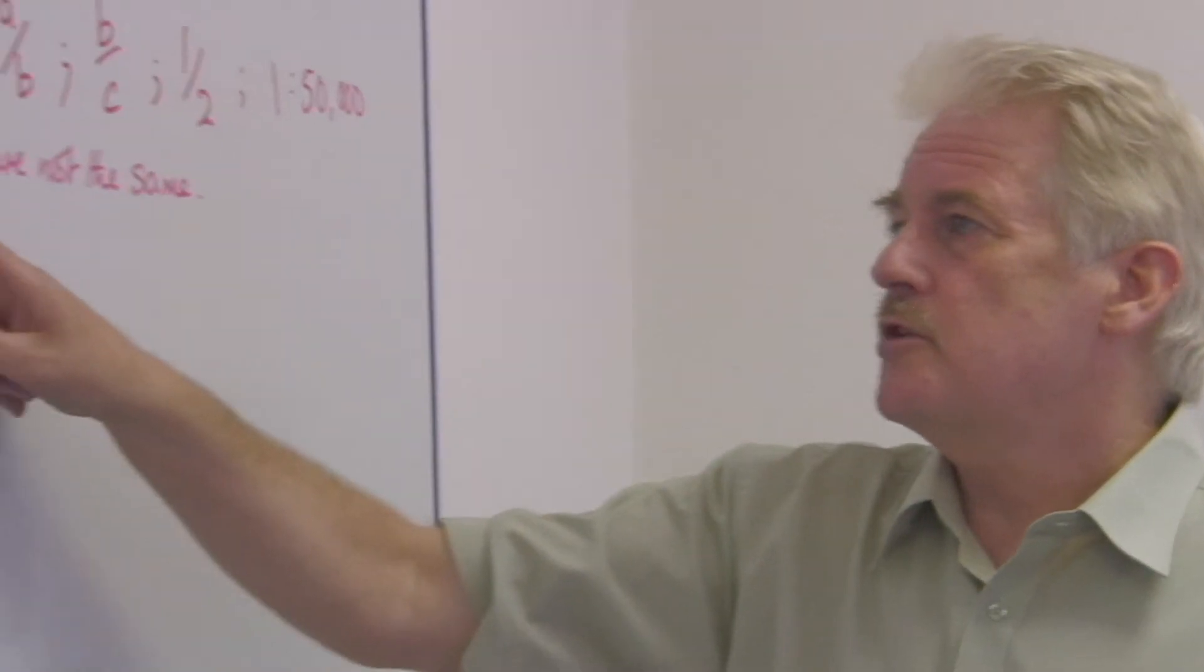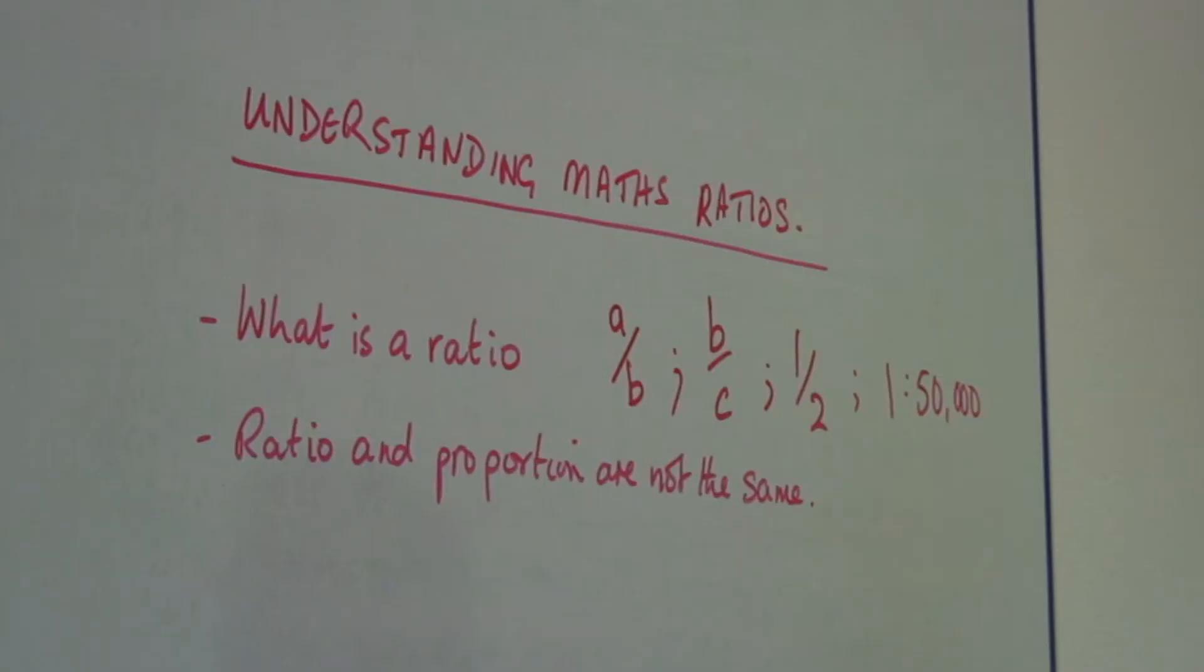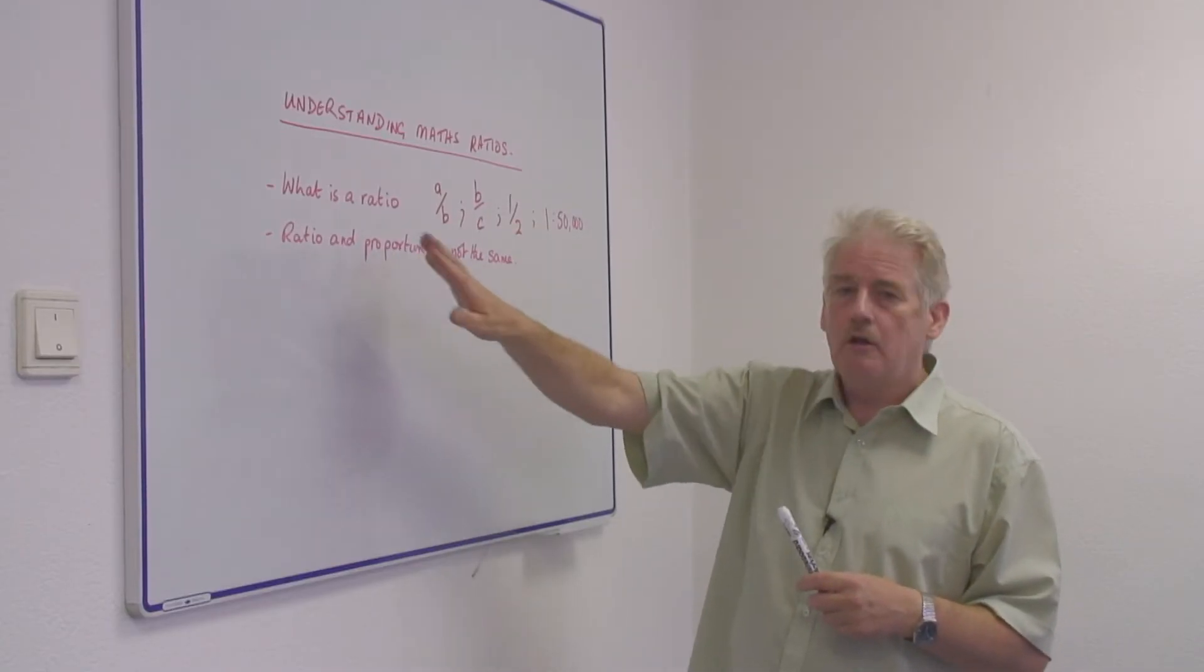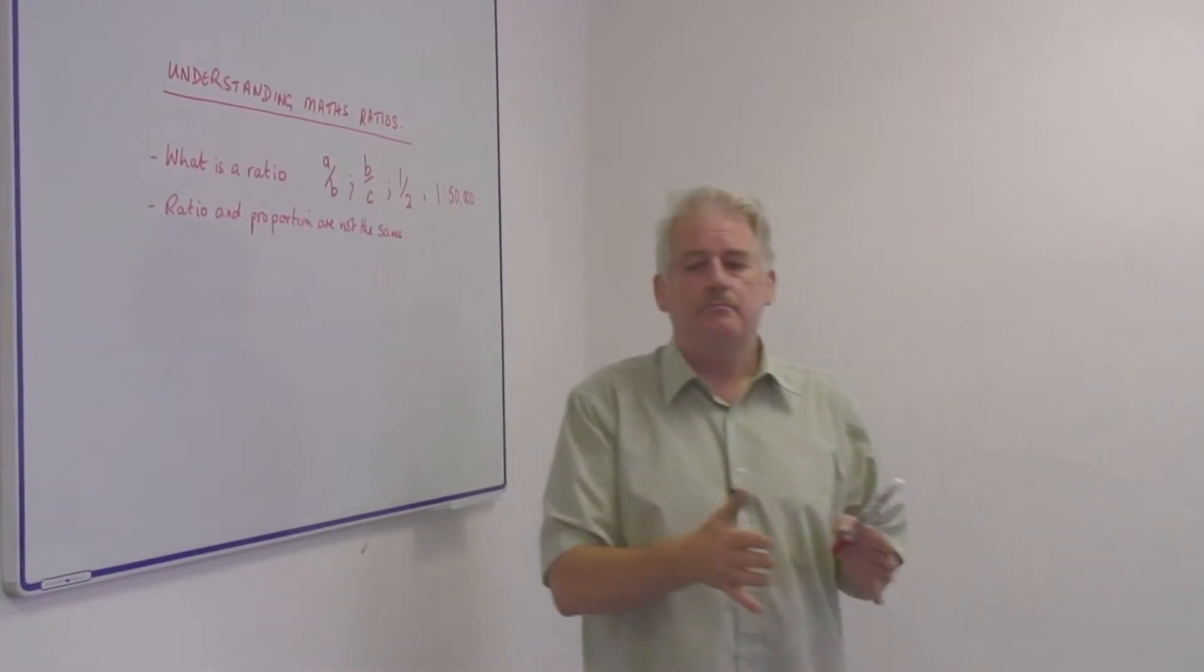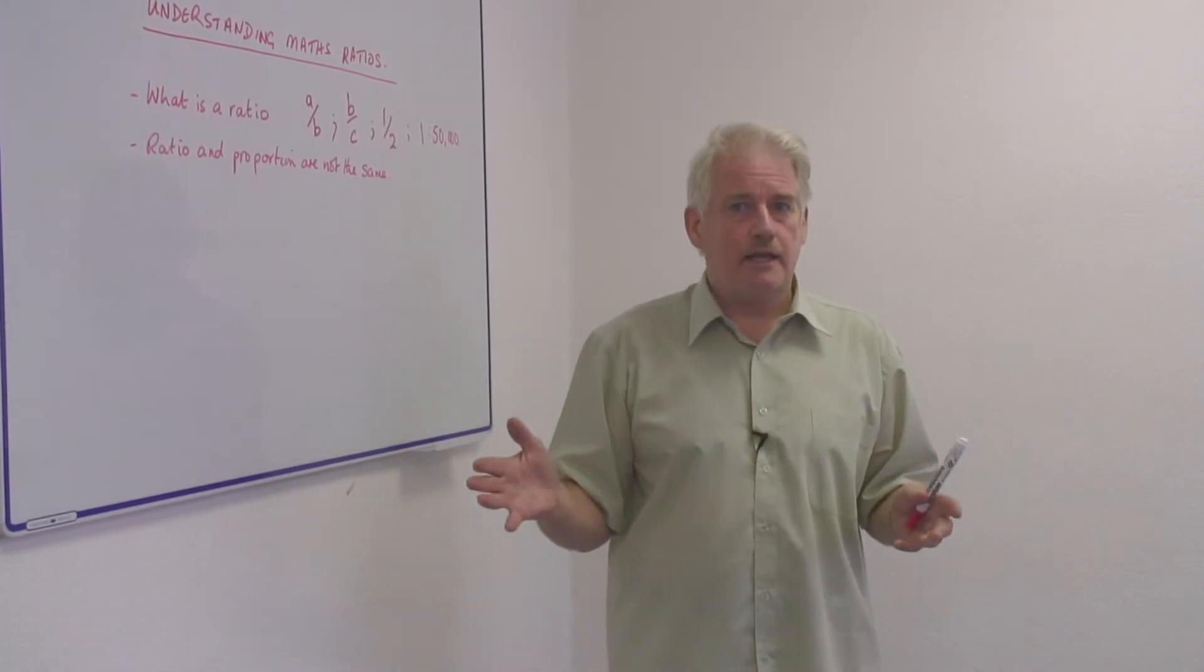There is a difference between ratio and proportion. If the ratio is fixed, then you will get a proportional relationship between the things you're considering. So if something is twice as big on the map as it is on the ground, that is what you would expect.